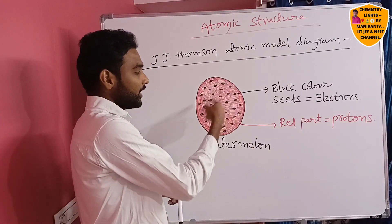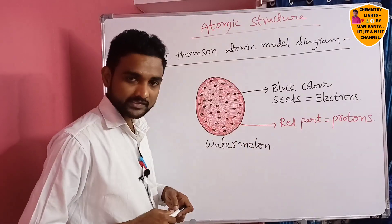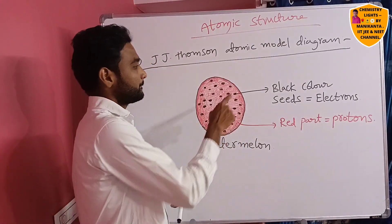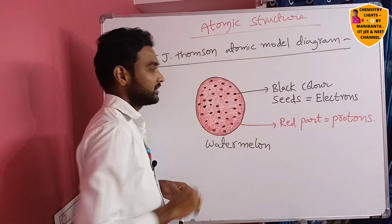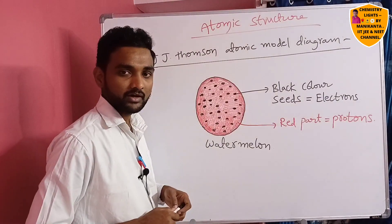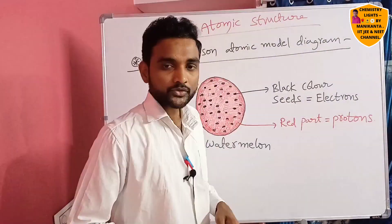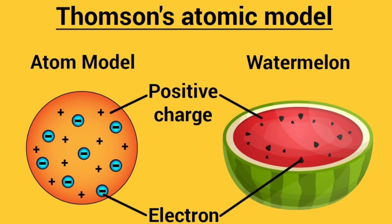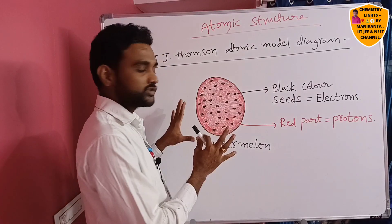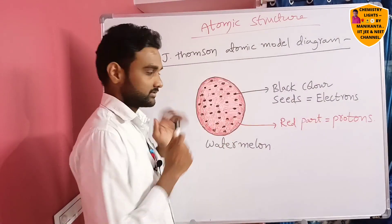In the watermelon diagram, the red part is compared with protons and the black seeds are compared with electrons. So in the atom, electrons and protons exist in this way — that is how he proposed his theory.